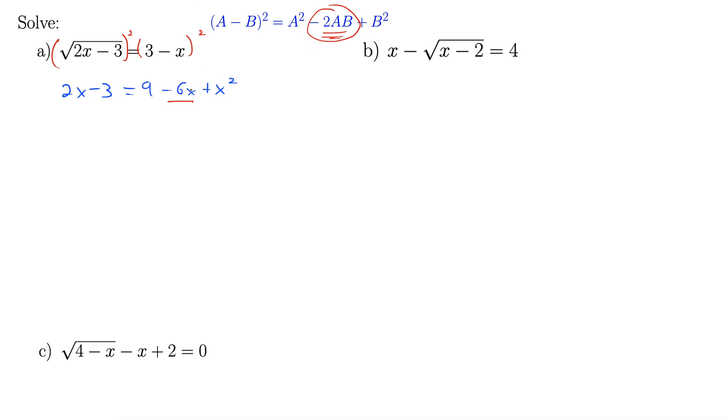Anytime you see an x squared and an x in an equality, you want to get 0 on the other side of the equal sign. Since the x squared is already on the right, we'll work to get a 0 on the left. So let's subtract a 2x from both sides and add a 3 to both sides. That gives us x squared minus 8x plus 12. Okay, I rearranged a little bit too. Now we're ready to factor.